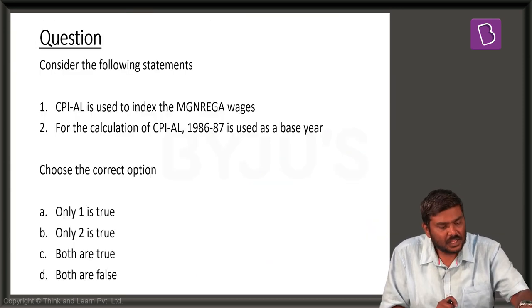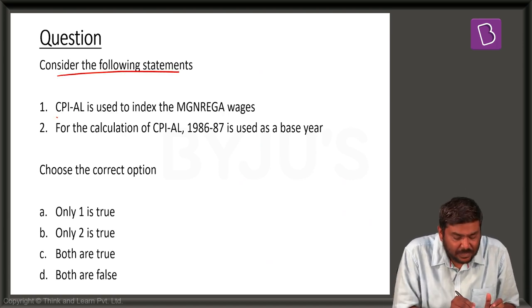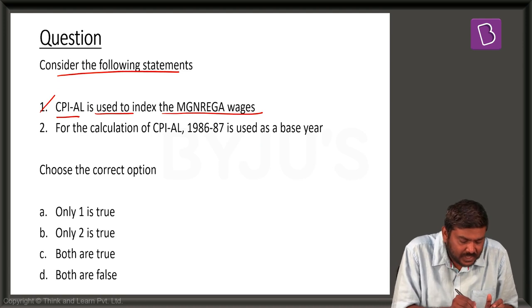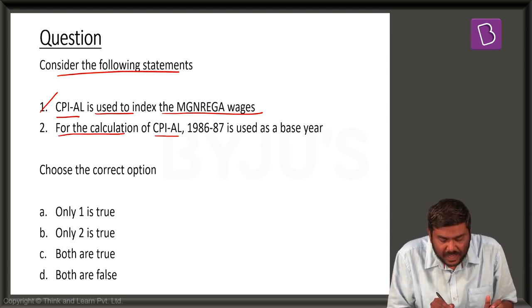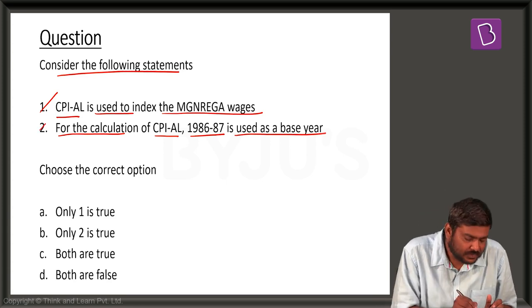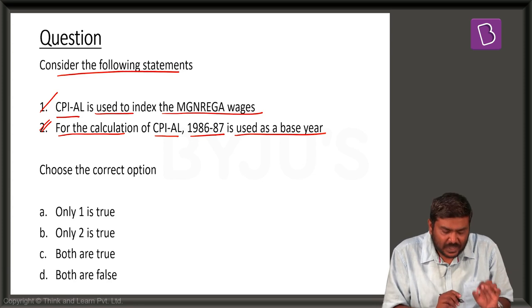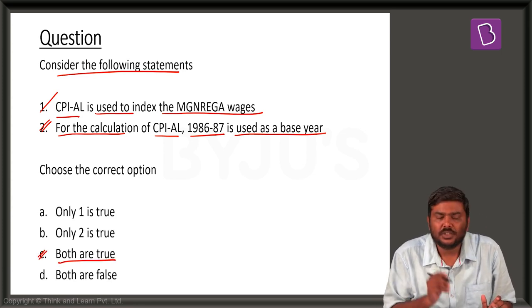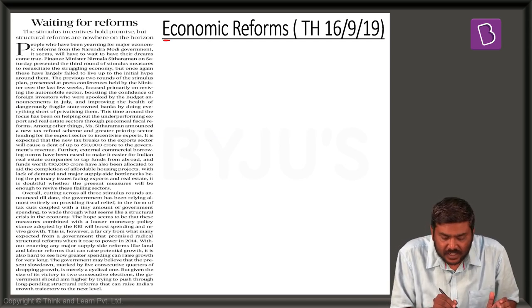Based on this article, consider the following statement: CPI-AL is used to index MGNREGA wages — yes, it is true. For the calculation of CPI-AL, 1986-87 is used as the base year — as of now, this is also correct. So option C — both statements are true — is the right option.